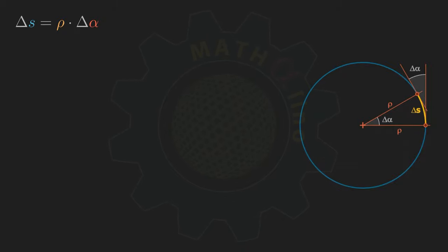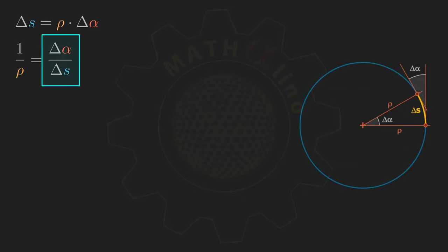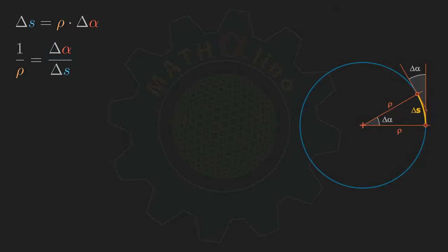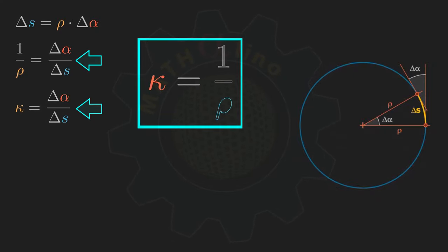Cross-multiplying, our equation becomes 1 over rho is equal to delta alpha over delta s. This quantity, delta alpha over delta s, is the change in direction of the curve per unit of arc, and we call it the curvature of the circle, denoted with the Greek letter kappa. From these two lines, it is clear that kappa is the reciprocal of rho. It is important to remember this relationship, so go ahead and note it on paper.